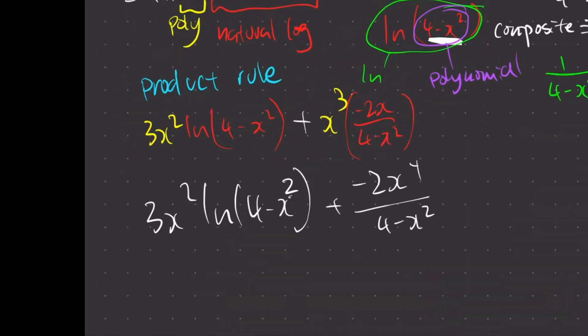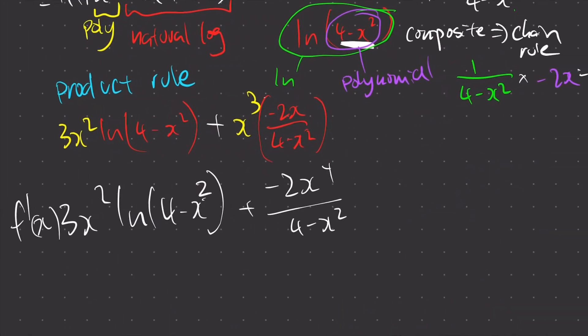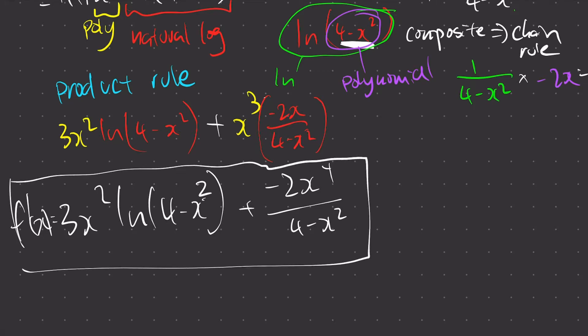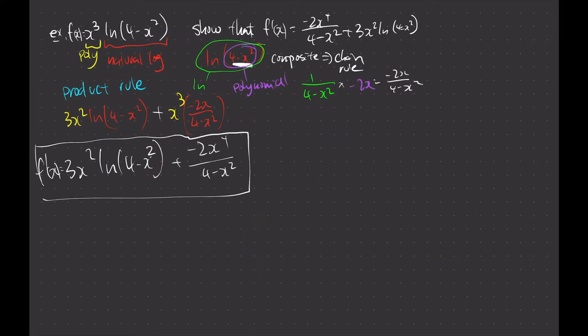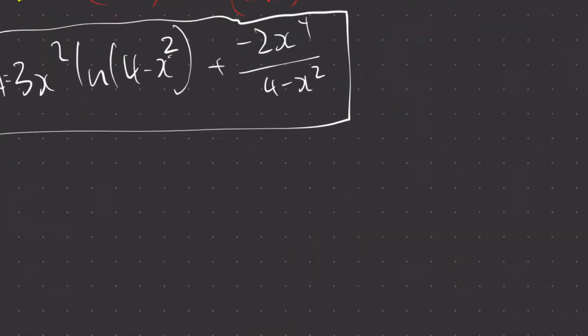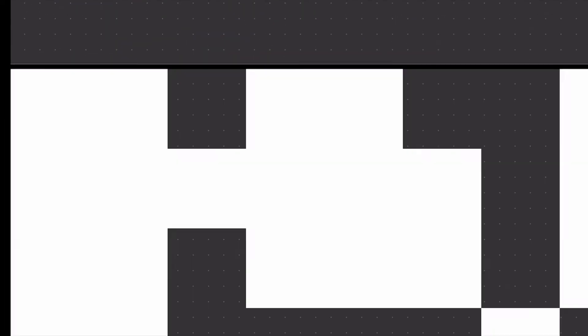To be official, let's write it as f prime of x equals that result. Final answer — done. Alright, next question.